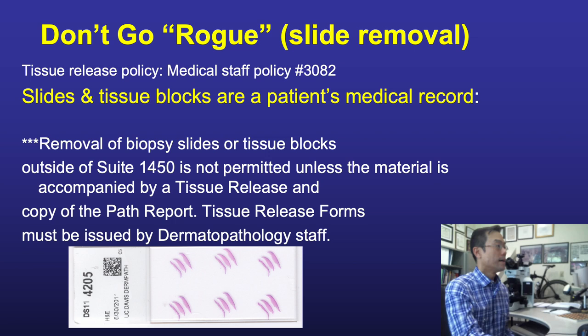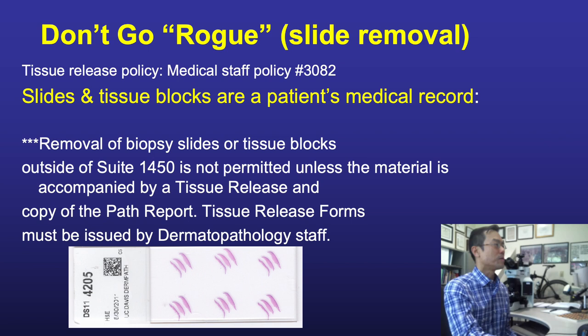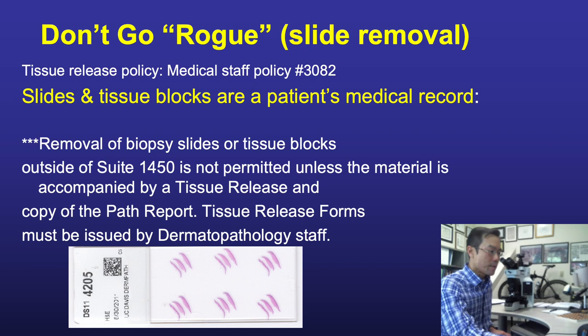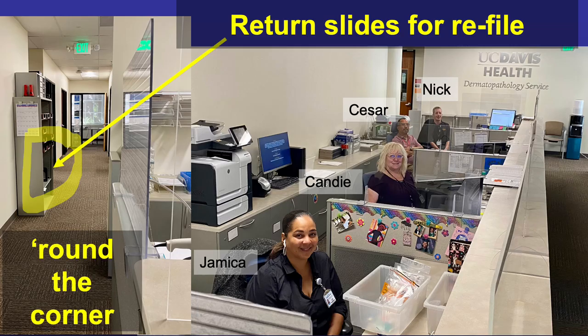One housekeeping item: these little one-by-three-inch glass slides are easy to move around, but remember they're part of the patient's medical record and, unlike electronic records, are essentially irreplaceable. If you need to take slides out of the dermpath unit, please check in with our admin staff and they can prepare a tissue release form. All recent slides from the past several years are filed on-site — you can retrieve them yourself or ask admin staff with a little advance notice. When finished, just put them on the designated shelf around the corner from the main admin desk.